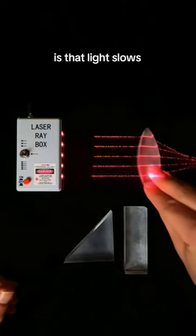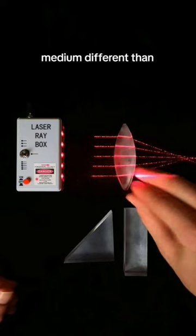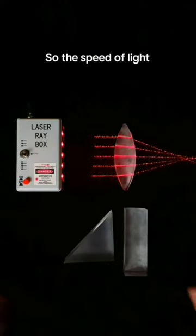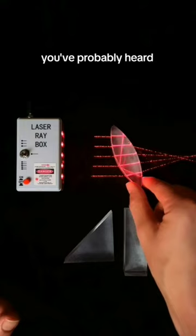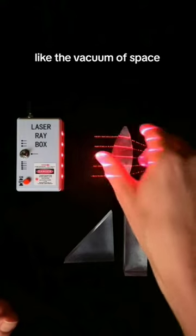So the main principle is that light slows down as it enters a medium different than a vacuum. The speed of light you've probably heard is its speed in a vacuum, like the vacuum of space.